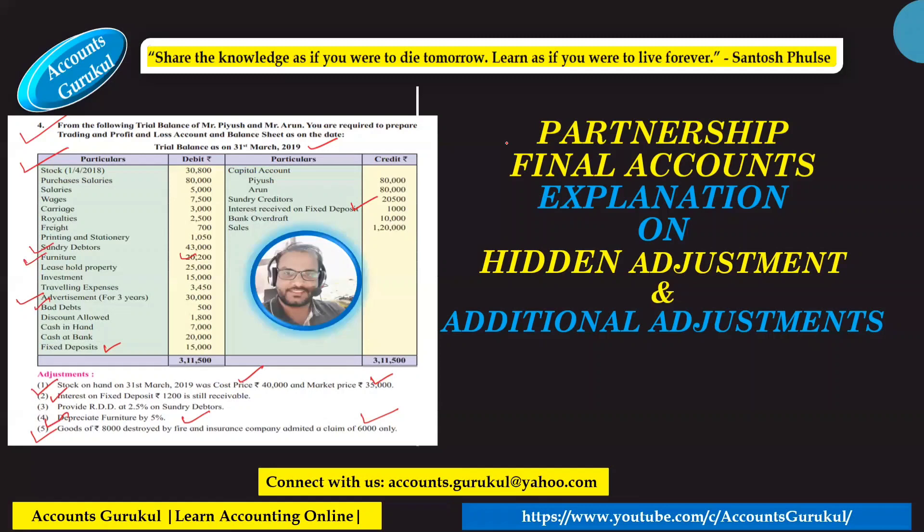In this partnership final accounts problem, we are going to discuss about prepayment entries, how RDD (Reserve for Doubtful Debts) works, how interest on fixed deposits still receivable works, how accrued interest is handled, how to do the depreciation entry, and goods of rupees 8,000 destroyed by fire where the insurance company admitted a claim of 6,000 only.